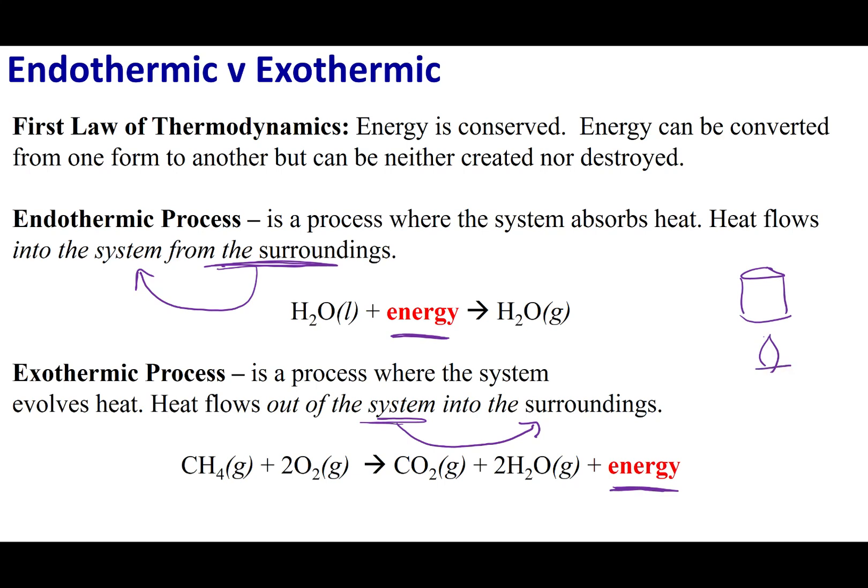Let's say that I have a beaker worth of chemicals, and on the bottom of my beaker I'm going to have my Bunsen burner right here. The first thing I want to ask you is: is this an endo or exothermic process? What I think you should note is that you can't answer this question. The reason you can't answer this question is I haven't defined what our system and our surroundings is.